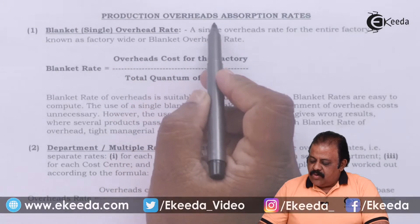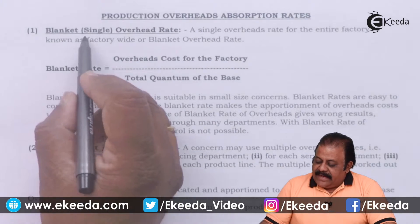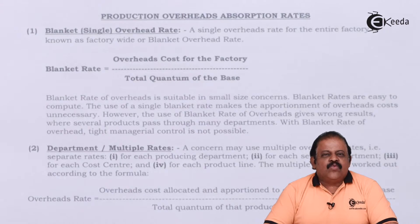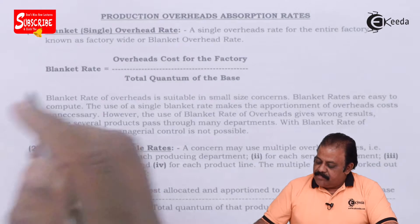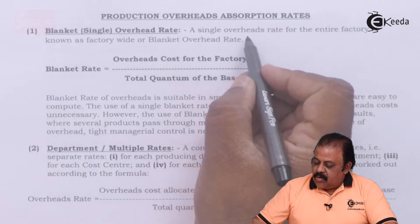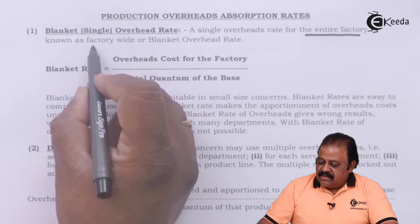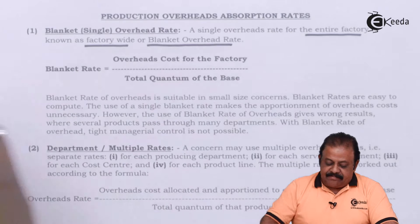Production overhead absorption rates — blanket or single overhead rate. In this case, one rate is calculated and it is followed for absorption of factory overheads for all types of jobs or orders. A single overhead rate for the entire factory is known as the factory-wide or blanket overhead rate.